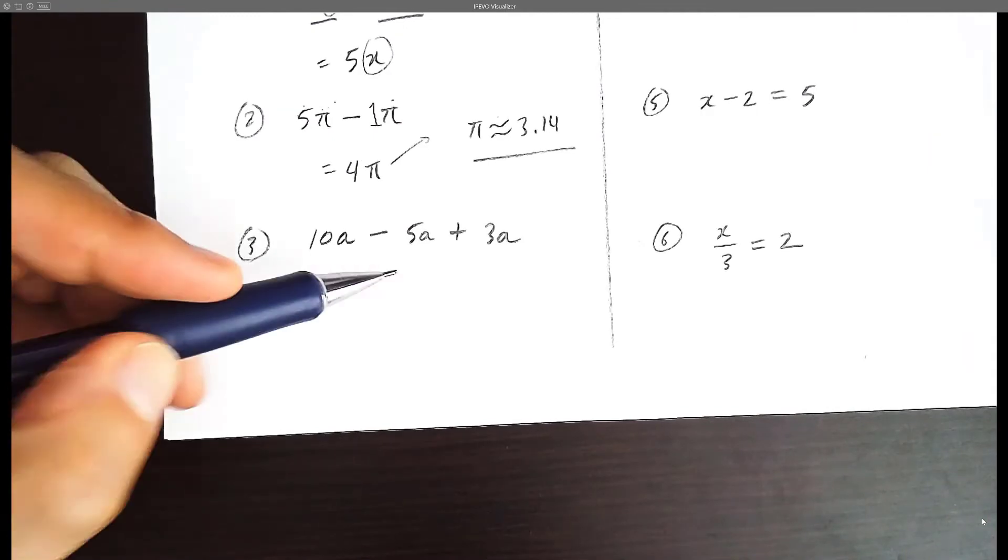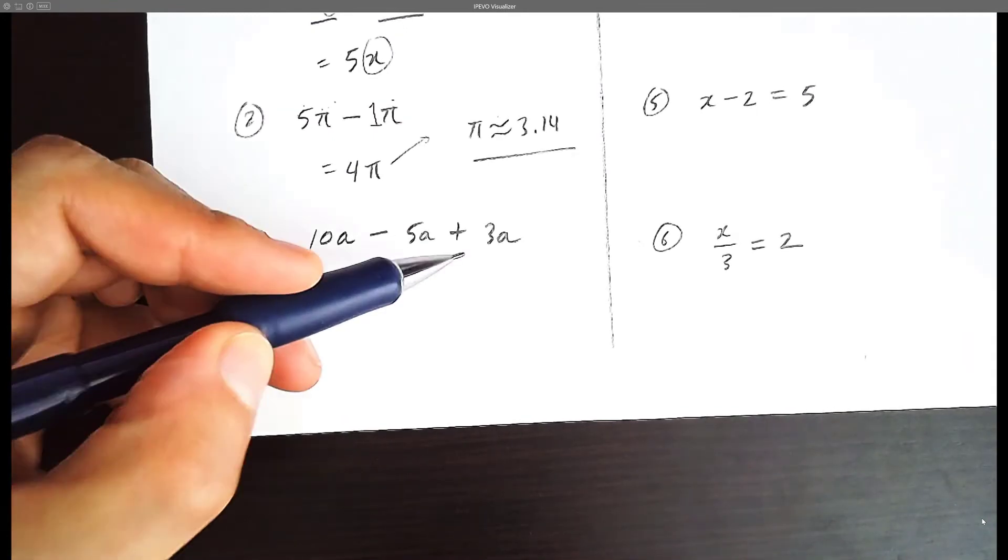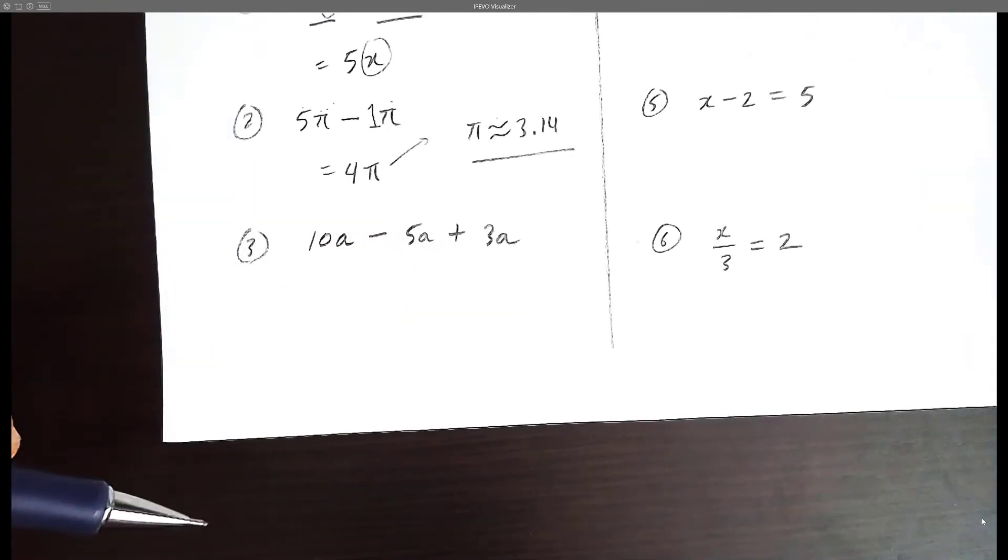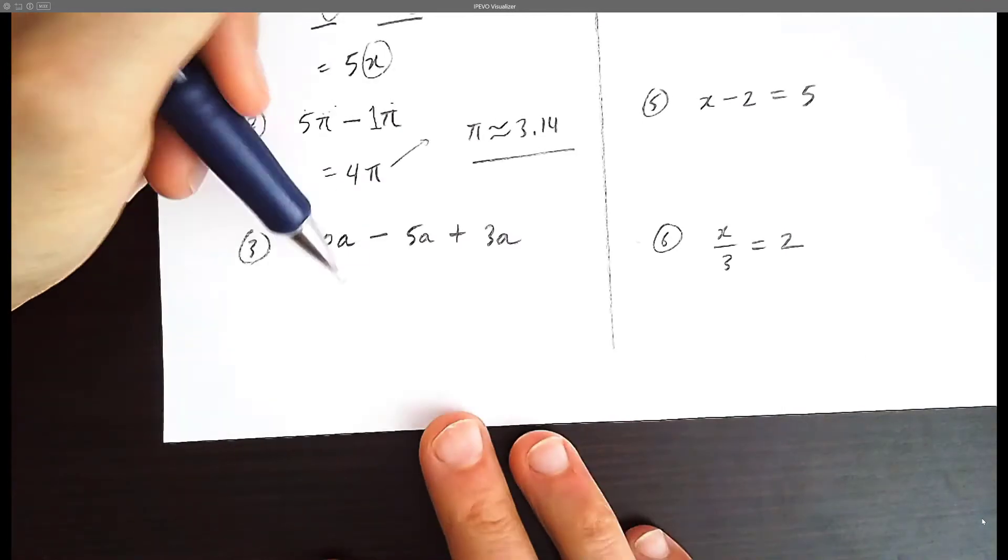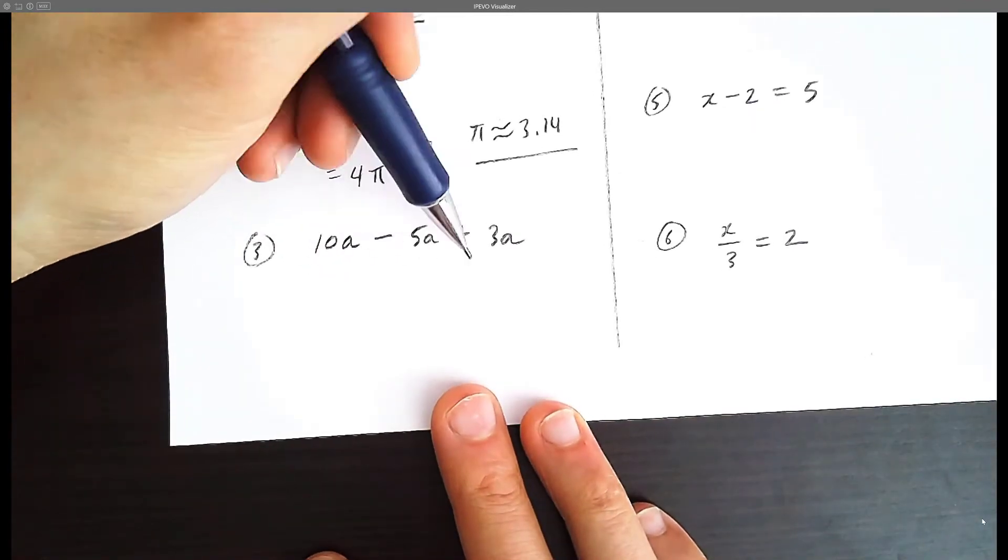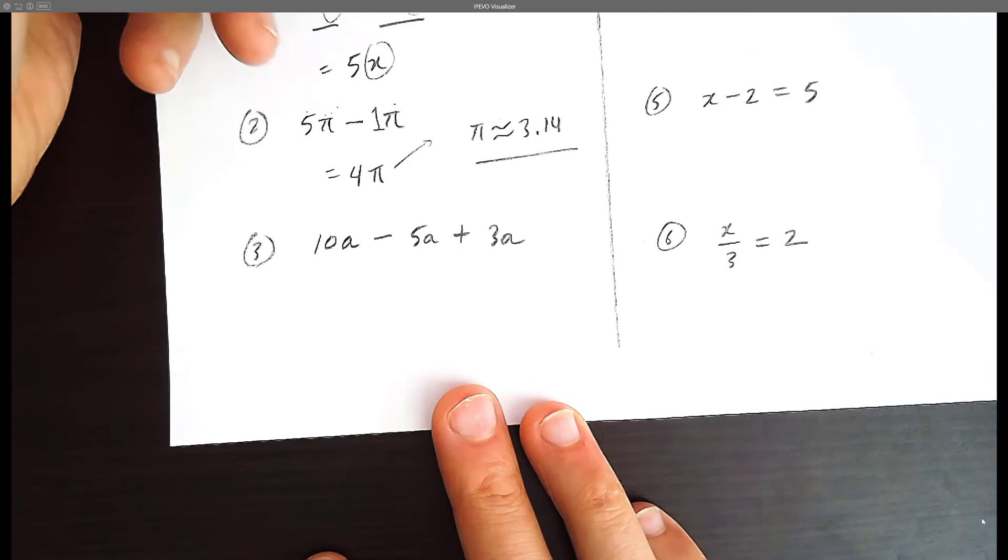What if you have 10 apples and you take away 5 apples and then you add 3 apples? So this question has three terms—one part, two part, three parts—but we can still do it step by step.